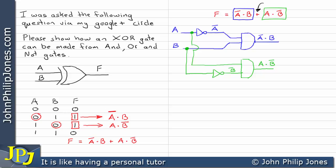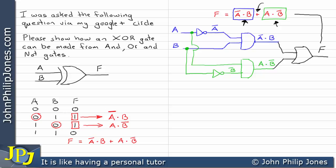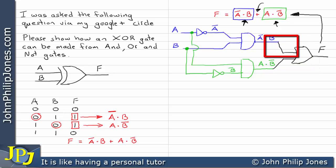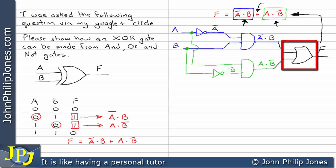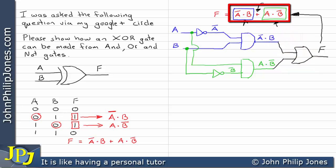This symbol here is an OR gate. It ORs this min term with the other one — those are the min terms as they appear in the circuit. We take these outputs from the AND gates and put them to the inputs of the OR gate, giving output F. This gate ORs together the two min terms, reproducing the Boolean expression.